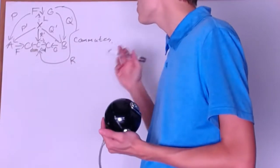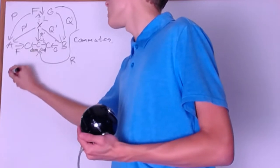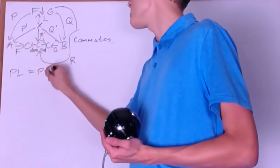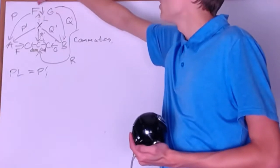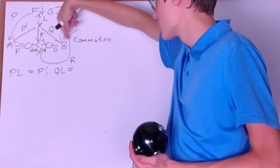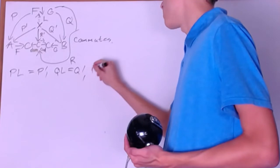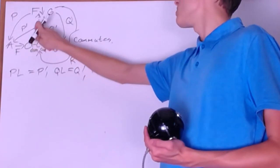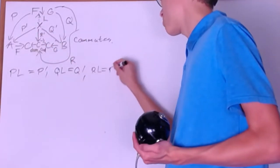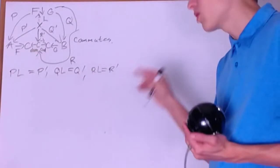Let's go ahead and see what it means to commute first. We'll have L and then P, so that is P∘L, and this takes you from X to A, and so that has to be equal to P prime. We'll also have L and then Q, which is Q∘L, and that has to be equal to Q prime. And we'll also have L and then R, so R composed with L, and that has to be equal to R prime — because this takes you from X around to the arrows of the category. That's what it means for this diagram to commute, and if we can prove these three facts, that's all we need to prove the theorem.